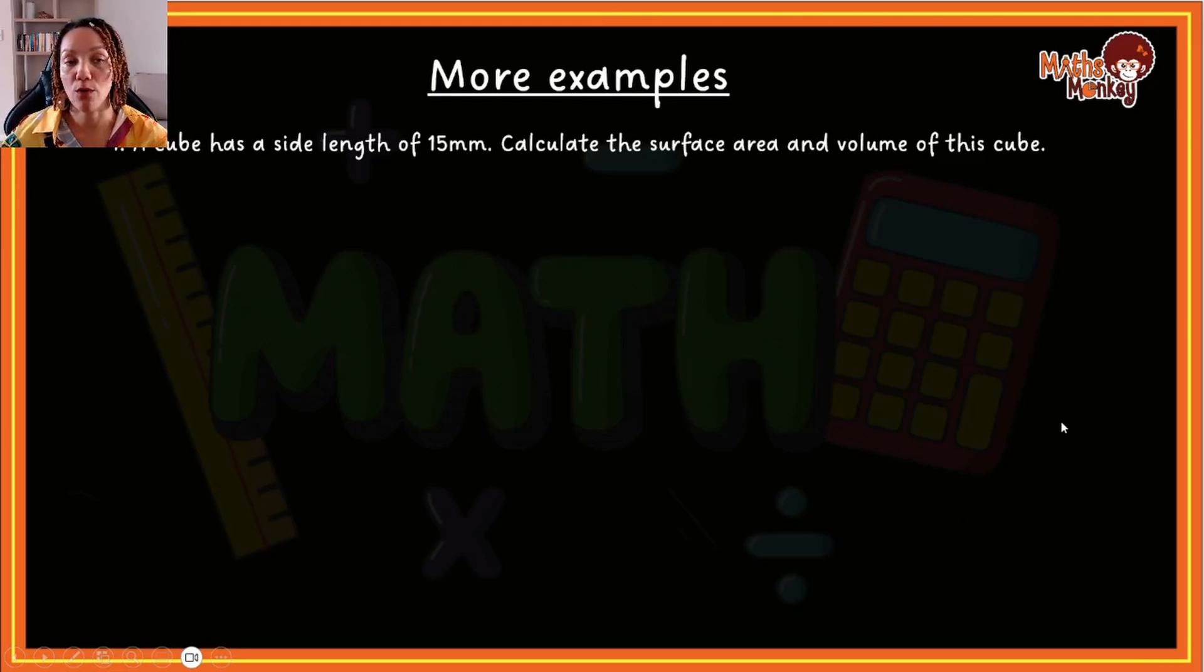Now let's look at more examples. A cube has a side length of 15 millimeters. Calculate the surface area and volume of this cube. Okay. So whenever we are being asked surface area and volume, we will always start with the formula first. So for surface area, we know it's 6 multiplied by side to the power of 2. So you have got 6 multiplied by 15 to the power of 2.